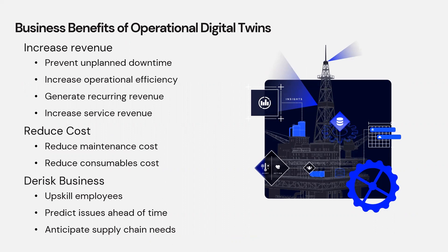Under increased revenue, one of the first things you can do is to prevent unplanned downtime. This is often under the category of predictive maintenance. By using your data, you can predict when your asset will fail, often weeks in advance, which could save you hundreds of thousands to millions of dollars of lost revenue due to unplanned downtime.